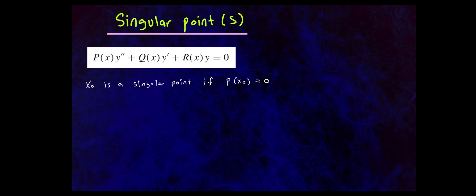Now you can classify singular points. A singular point could be either regular — a regular singular point — or irregular. We're going to use the limit definition to determine which one it is.